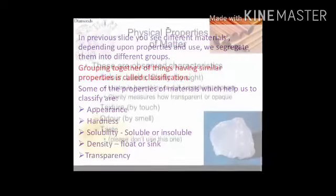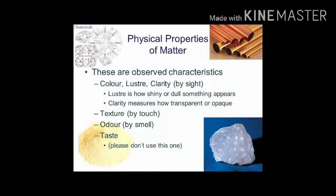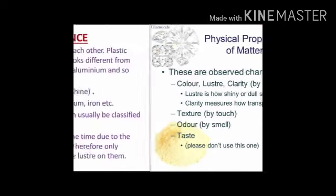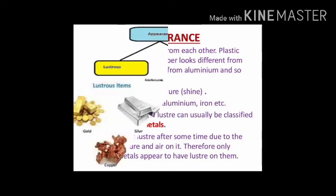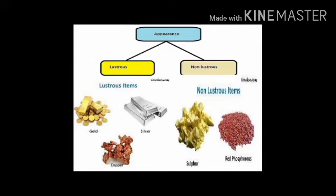Materials की कुछ properties हैं: appearance, hardness, solubility, conductivity, transparency, आदि। कुछ properties ऐसी होती हैं जो हम देखते ही पता चल जाती हैं कि object किस तरह से अलग है — वो कहलाती हैं appearance की properties। देखने से ही materials हमें अलग-अलग दिखाई देते हैं — कुछ में luster होता है मतलब shine होती है, कुछ में नहीं होती। कई का color अलग होता है।